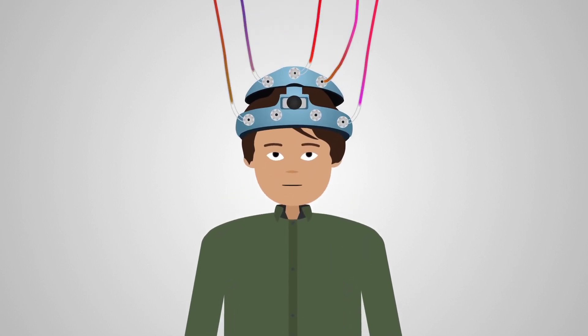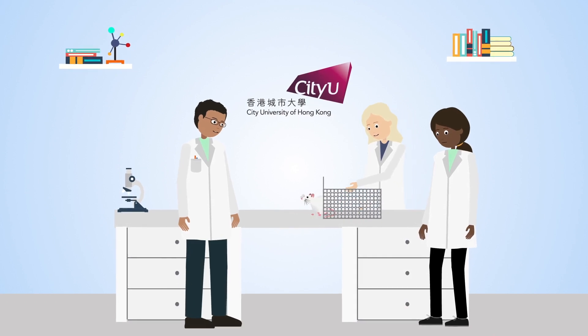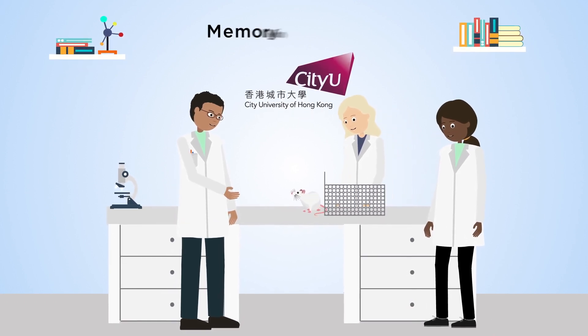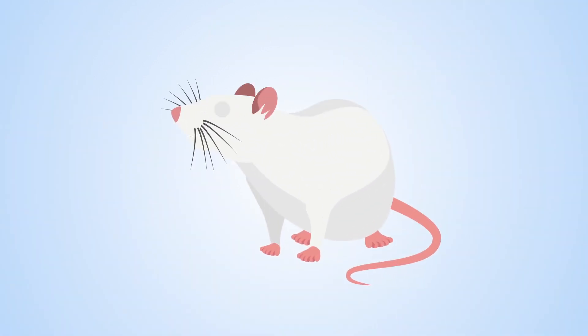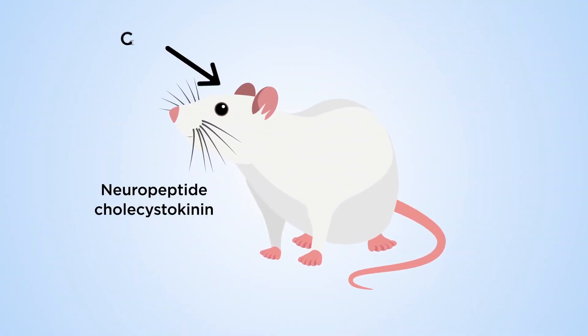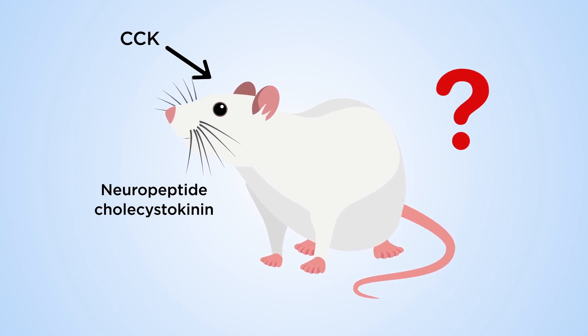Implanting memories into someone's brain seems like science fiction. A team of researchers from City University of Hong Kong has shown memory implantation in rodents is possible. The group were interested in whether the neuropeptide cholecystokinin could be used to implant memories in anesthetized rats.